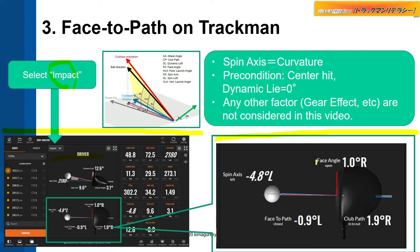The face angle is the horizontal angle of this red arrow — face direction. And the club path is the horizontal angle of this blue arrow — club head direction.